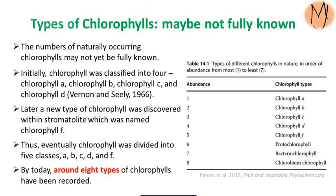The number of naturally occurring chlorophylls may not yet be fully known. Initially, chlorophyll was classified into four types: chlorophyll A, B, C, and D. But later, a new type was discovered within stromatolites — hard rock structures made by cyanobacteria in Western Australia — which was named chlorophyll F. Thus, chlorophyll was divided into five classes: A, B, C, D, and F. By today, around eight types of chlorophylls have been recorded, including chlorophyll A, B, C, D, F, protochlorophyll, bacteriochlorophyll, and chlorobium chlorophyll.